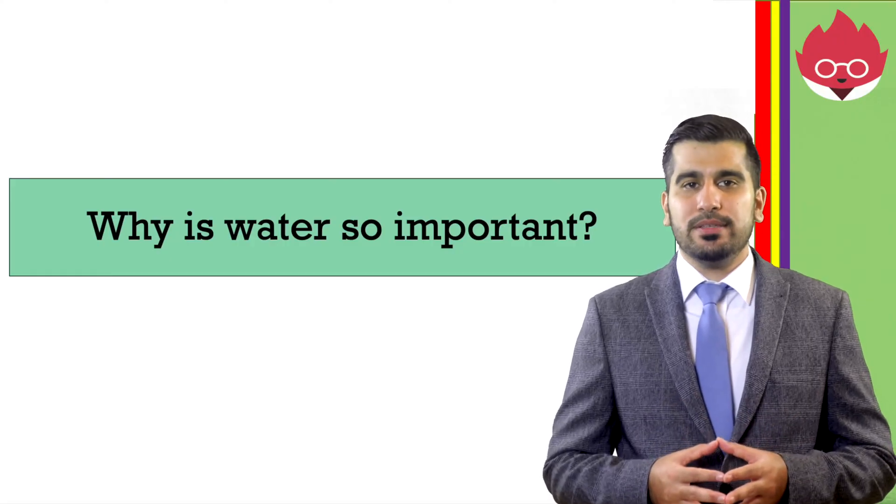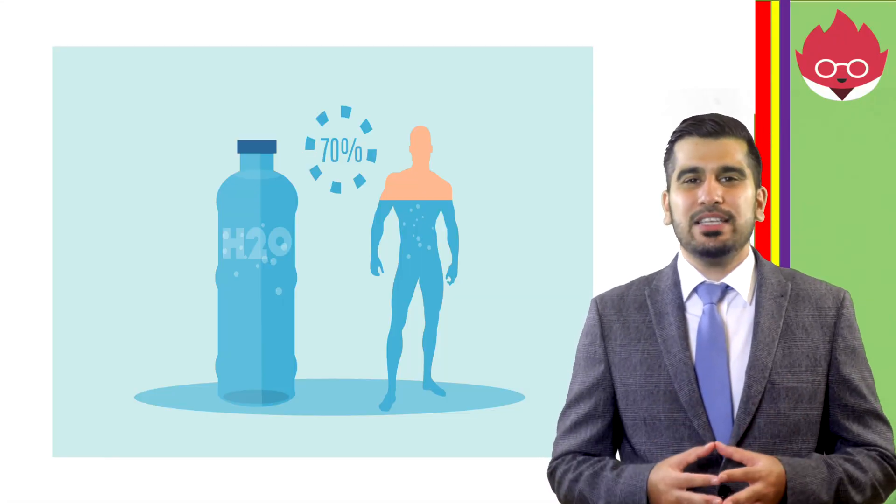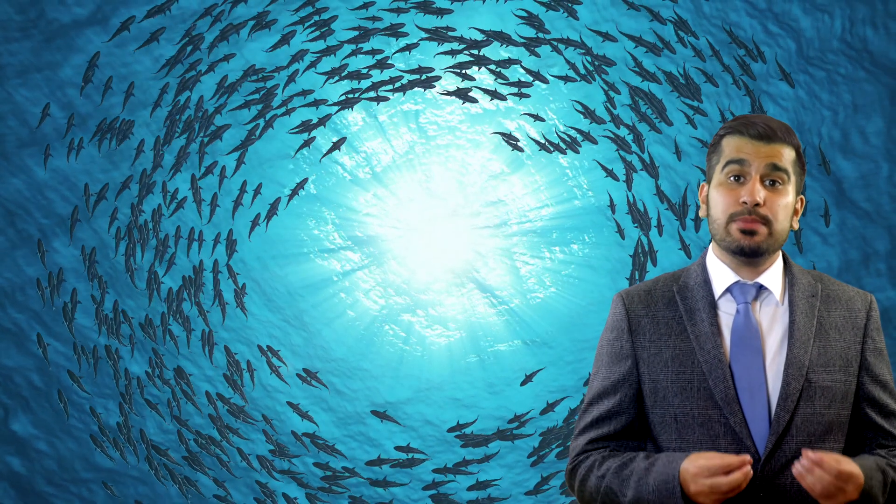Why is water so important? Around 60-70% of our body is made from it. It helps regulate temperature in living organisms. Many organisms rely on it as a habitat. And chemical reactions of life take place in it.